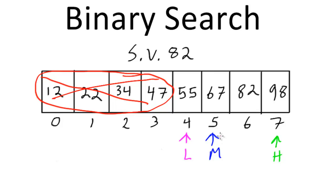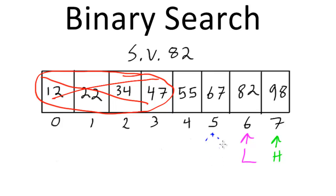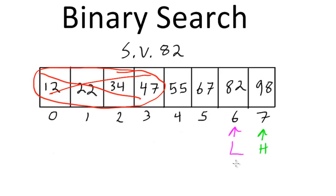The algorithm starts over again. We compare the value at the new midpoint — which is 67 — to our search value 82. Since 82 is greater than 67, we update low once more to one more than the midpoint. New low plus high is 13, divided by 2 is 6.5, truncated to 6, so midpoint is now 6 — which happens to equal low. We compare the value at index 6, which is 82, to our search value 82. They're equal, so we stop our search.